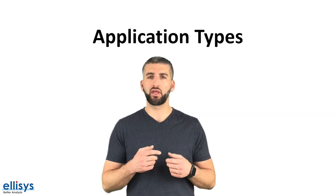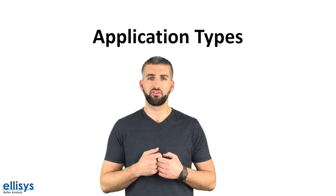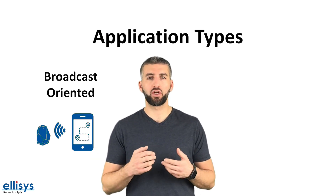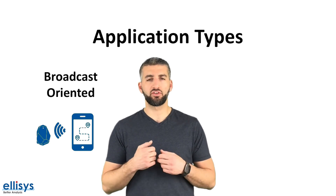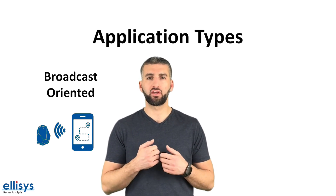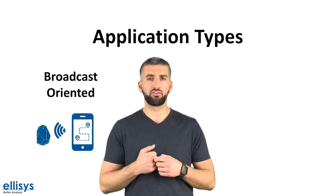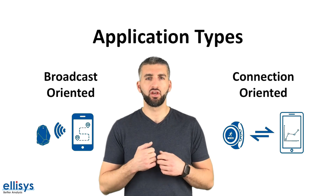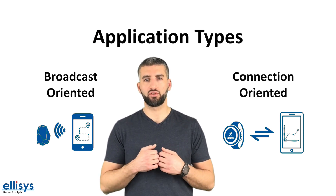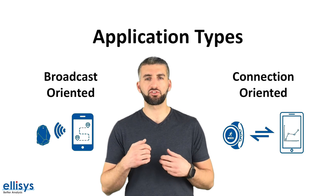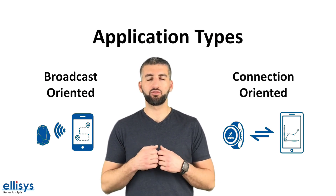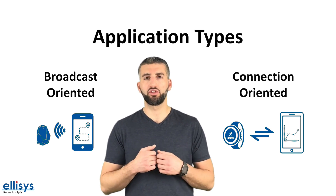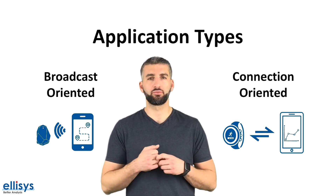Based on those two modes there are two main categories of BLE applications. We have applications that are broadcast-oriented, where a device may simply be broadcasting data for others to discover it and may not allow a connection to be established. On the other hand we have connection-oriented applications, where the two devices will be connected, synchronized, and exchange data on a regular basis. This allows for more complex use cases, such as a smartwatch or a fitness tracker connected to your mobile phone.